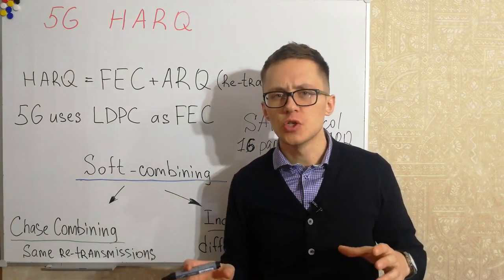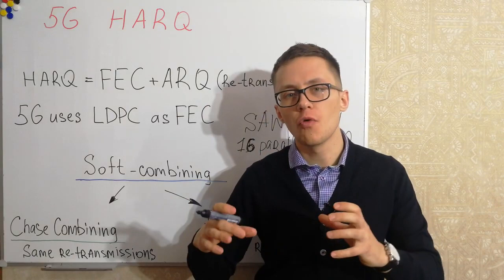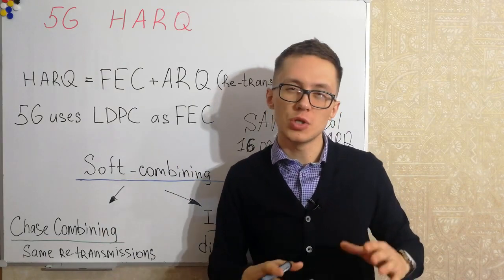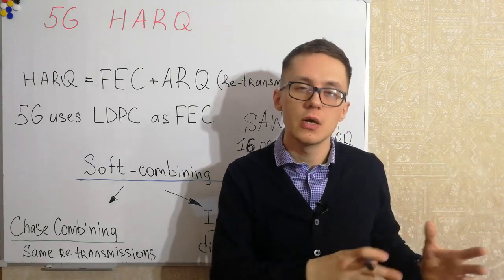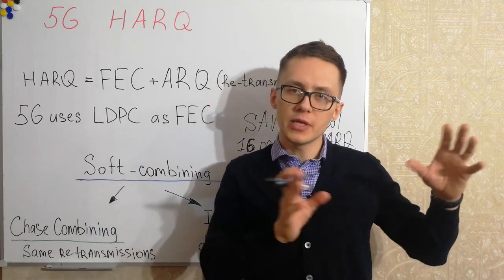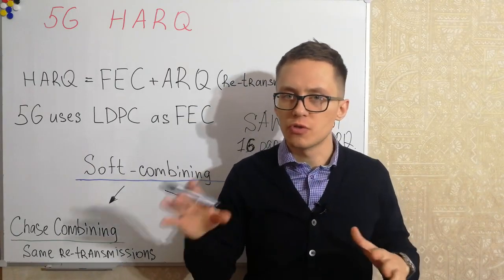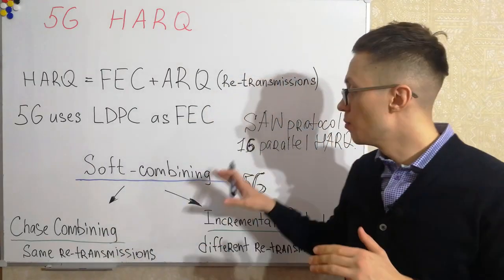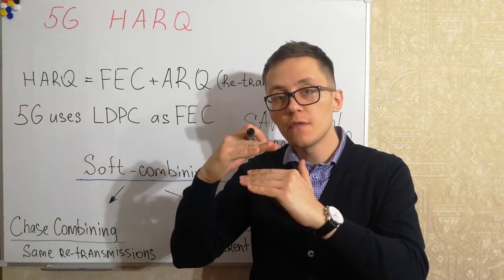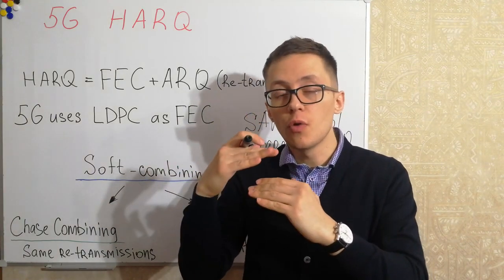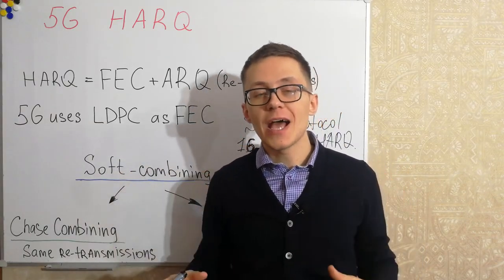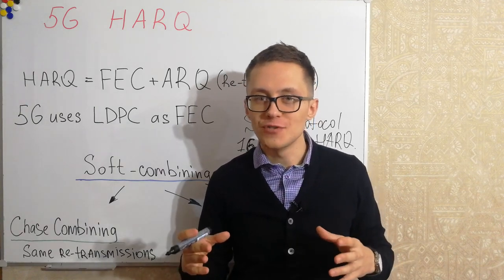Actually, when we are talking about retransmissions, we are talking about retransmissions for MAC layer, for second layer. We don't consider some possible retransmissions for radio link control layer. We are not talking about PDCP duplication. We are not talking about application level protocols and retransmissions. We are talking about MAC layer retransmissions because it is the second level after physical level. It is very fast and can be performed in a very frequent manner. So let's move to another aspect of HARQ process for 5G networks.